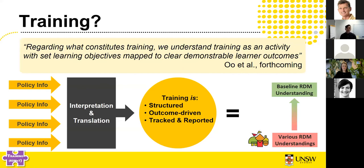Before turning to our RDM training, a definition of training is useful as a frame of reference. Training is an activity with set objectives that can be demonstrated. But to set those objectives and outcomes, we need to interpret and translate policies. Once that interpretation and translation is done, we can design training by structuring content so users can engage with it in a meaningful way to deliver identified outcomes that we can track and report. In the case of RDM training, a key goal is to move researchers — each with their own RDM understandings — to some sort of agreed baseline institutional understanding, so everybody has common vocabulary when talking about RDM.